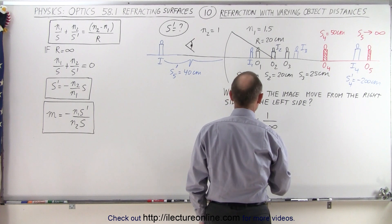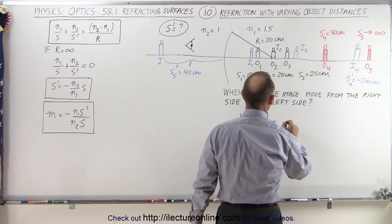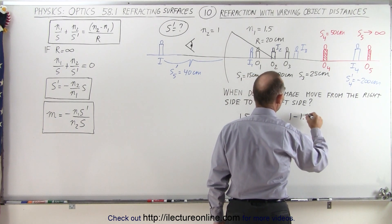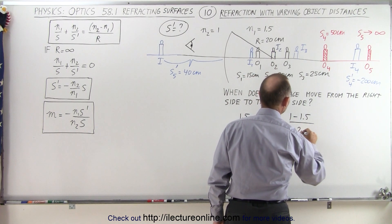So that is then equal to N2 minus N1, which is 1 minus 1.5, divided by minus 20.